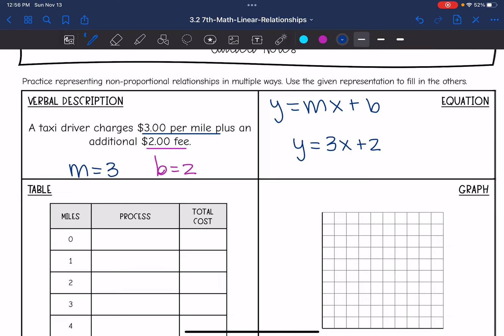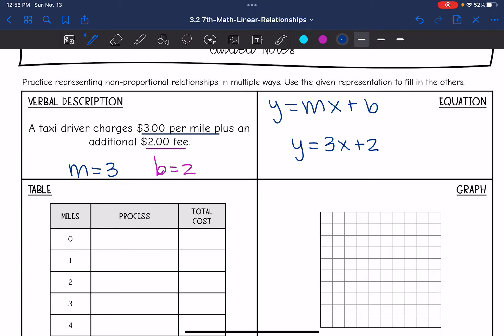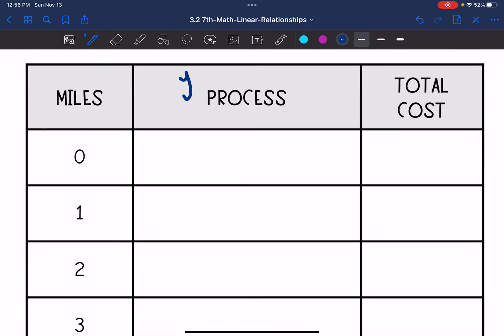So now that I have the equation, I can use it to fill out my table. The equation is y equals 3x plus 2. So every time I have an x, I'm just going to replace it with the miles. The miles is the x, because I will input that to tell me the output y, the total cost.